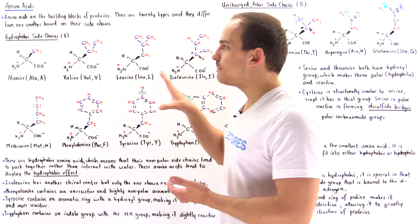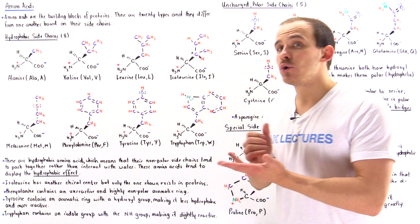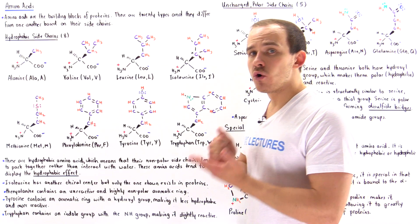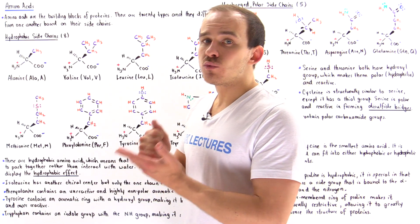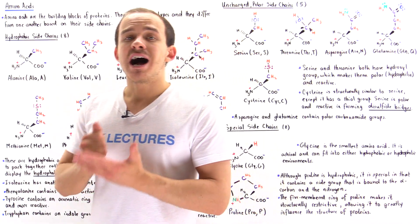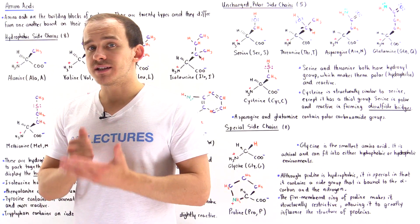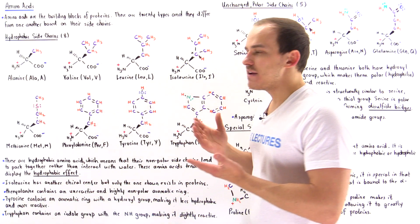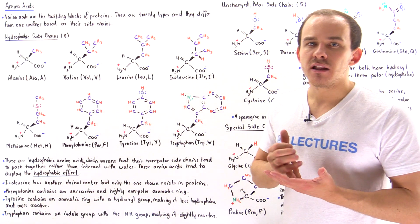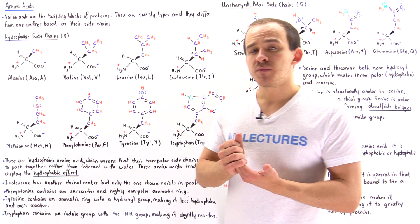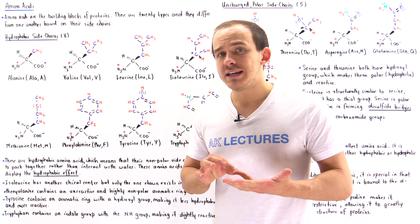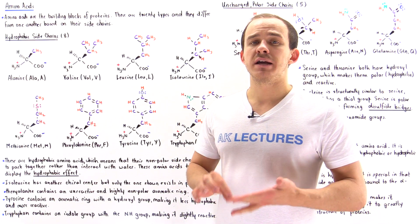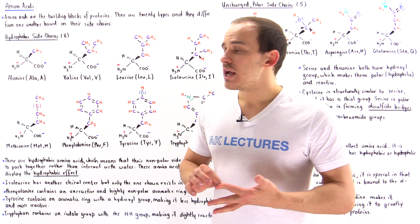Let's begin by focusing on those amino acids that contain nonpolar, nonreactive, hydrophobic side chains. We have eight of these: alanine, valine, leucine, isoleucine, methionine, phenylalanine, tryptophan, and tyrosine.